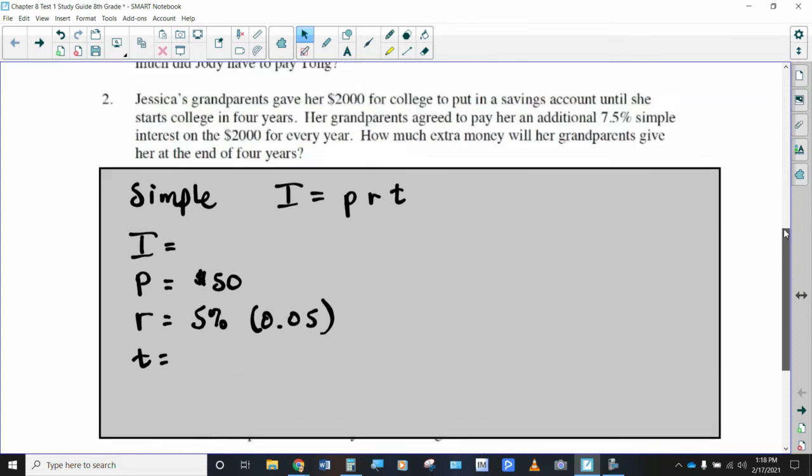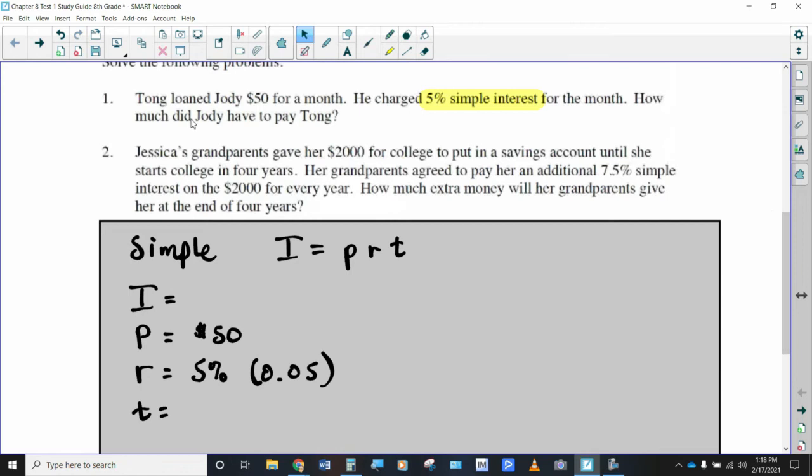And then the amount of time, what kind of a time period are we talking about here? How much did Jody have to pay? So it's $50 for a month, one month, and he charged simple interest for the month. So we're just talking about the number one. It's for one month. So that should make it easy.